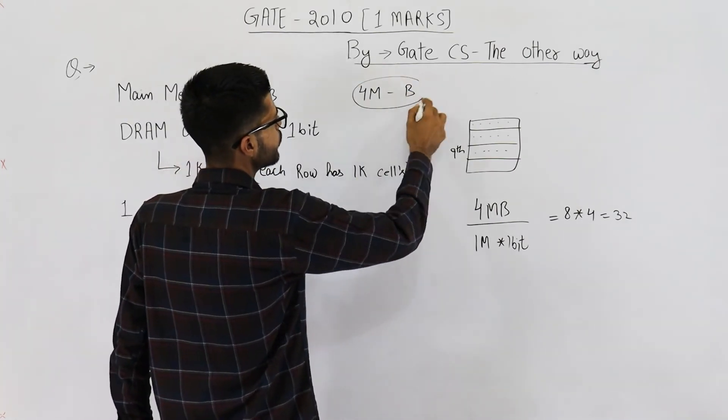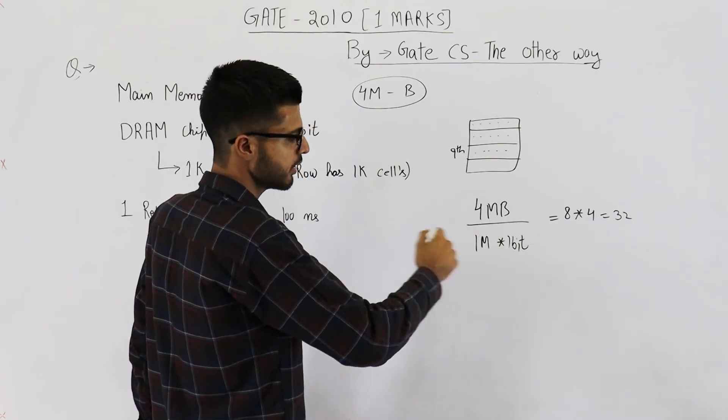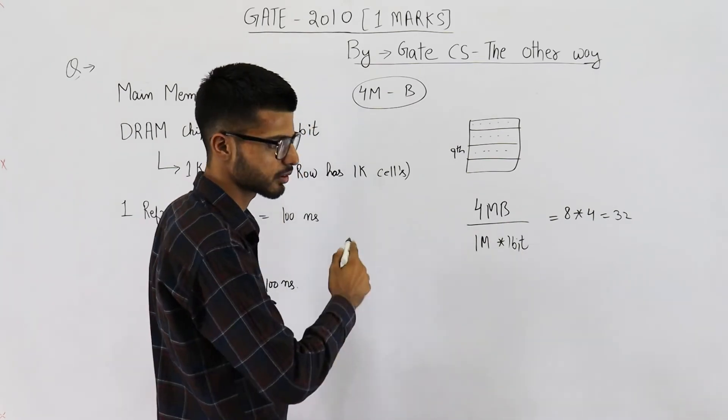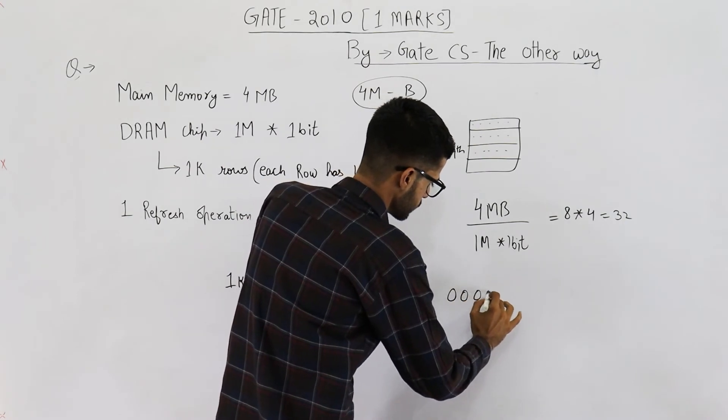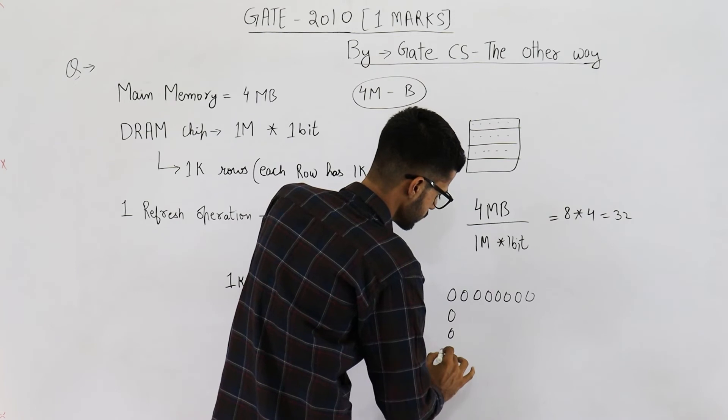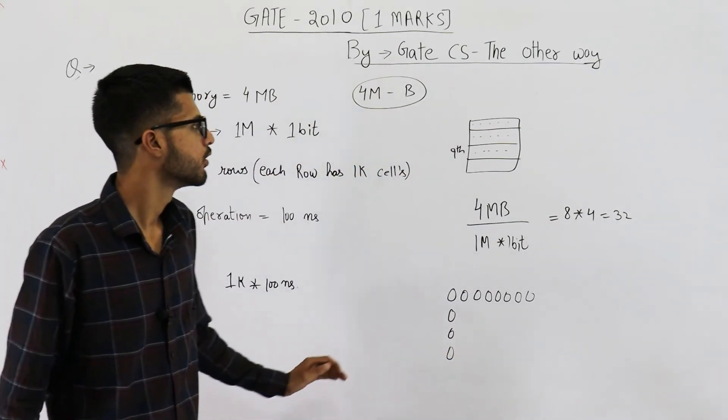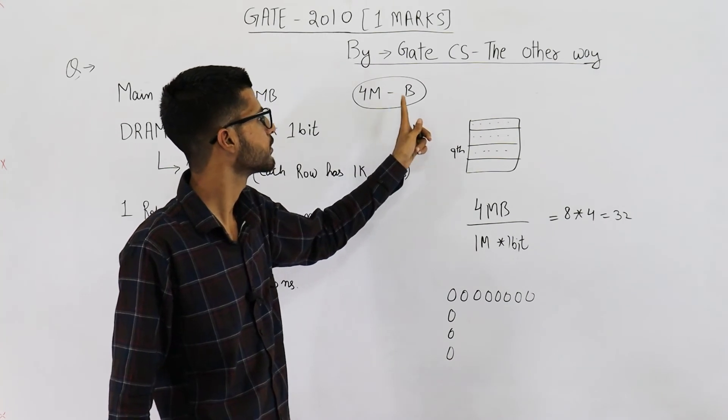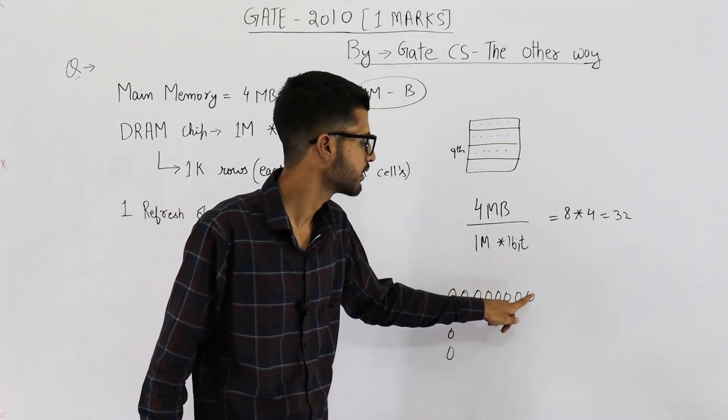But you can just see one case. In this case, you will be having 8 chips to this side and 4 chips to this side. That means, this kind of matrix of chips will be formed for getting 4M locations each of one byte. You can see 1, 2, 3, 4, 5, 6, 7, 8.